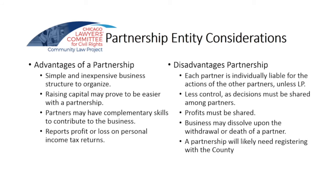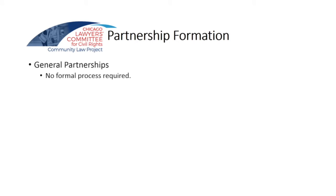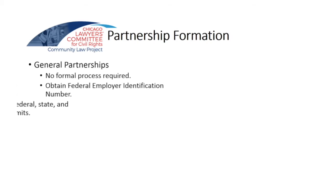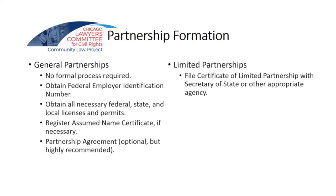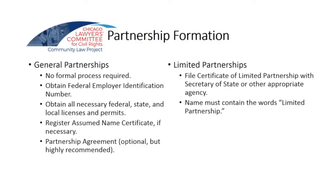You'll likely need to register the partnership with the county. On formation, there's no formal process required unless you're going into limited liability partnerships. You'll need all the necessary licenses and permits. If you have a DBA or assumed name for your business, you'll need to file that. We recommend a partnership agreement. With limited partnerships, you have to file a certificate of limited partnership. There are different forms of filings necessary depending on the state that you're operating in. The forms are fairly straightforward, but we recommend that you consult an attorney. If you choose to use a limited partnership, the LP designation needs to be in the name — that's a statutory requirement. A written partnership agreement is required.